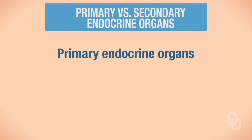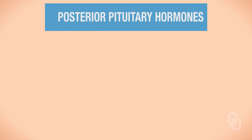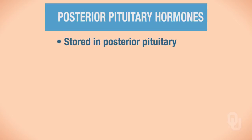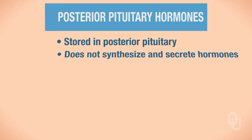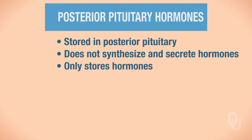Now let's focus on the hormones of the posterior pituitary. These hormones are stored in the posterior pituitary — that is very important to understand. The posterior pituitary does not synthesize and secrete hormones; the posterior pituitary only stores hormones.